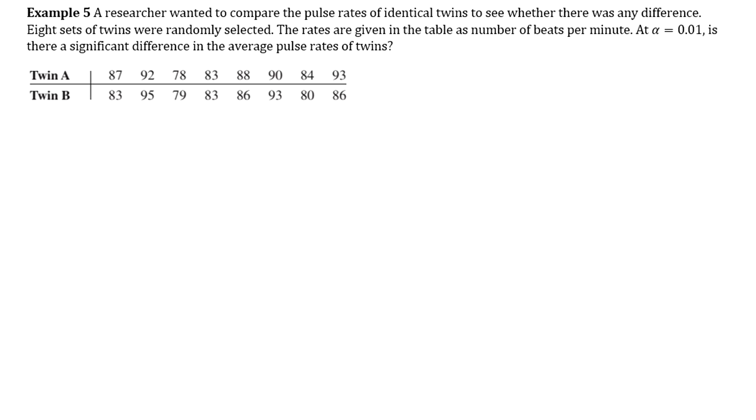Okay, example five says that a researcher wanted to compare the pulse rates of identical twins to see whether there was any difference. Eight sets of twins were randomly selected. The rates are given in the table as number of beats per minute. Alpha is 0.01. Is there a significant difference in the average pulse rates of twins?